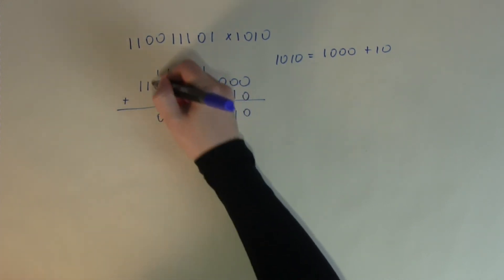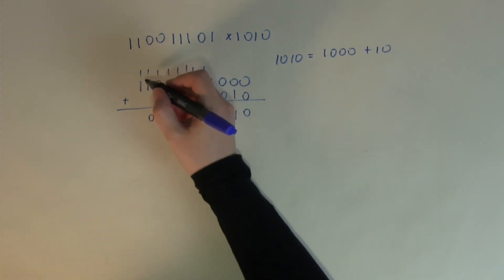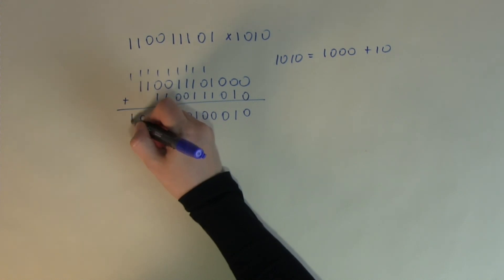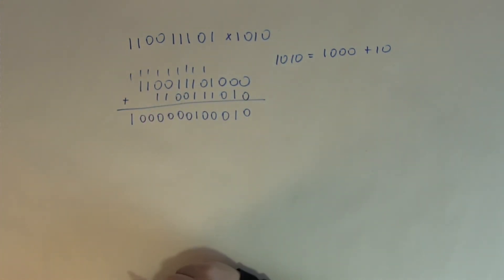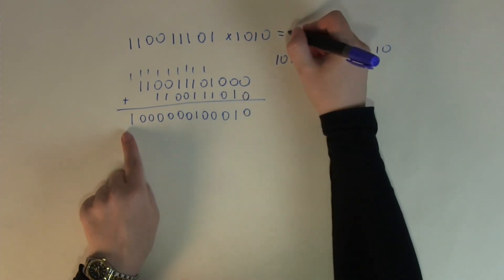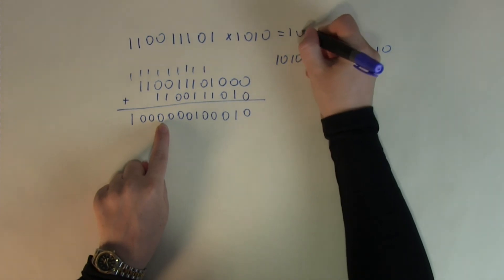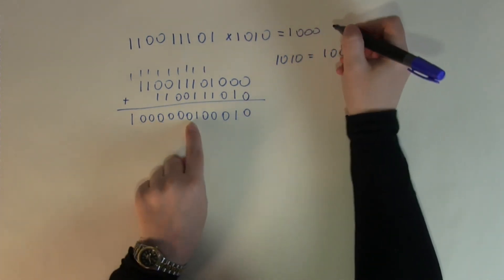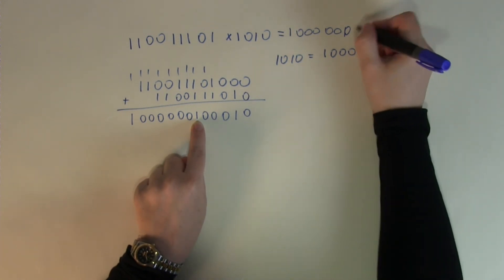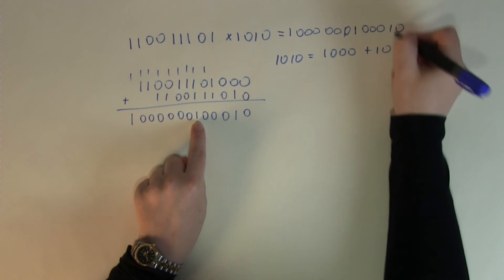Completing the addition column by column: 1+1=0 carry 1, 1+1=0 carry 1, 1+1=0 carry 1, which we bring down at the front. So the product of these two binary numbers equals 1, then 1, 2, 3 ones — with 6 zeros altogether — then 1, then 3 more zeros, then 1 and 0. That's a rather large binary number.